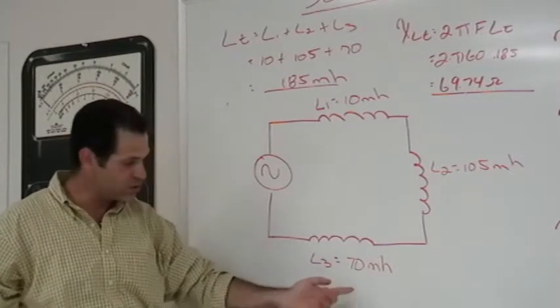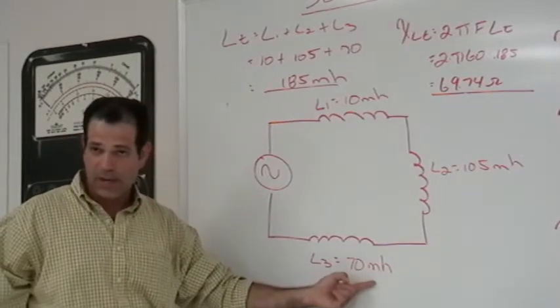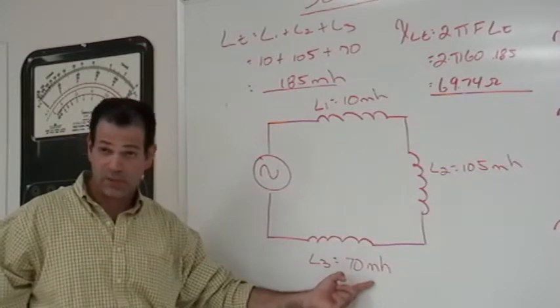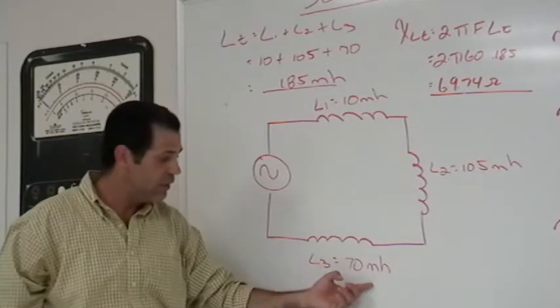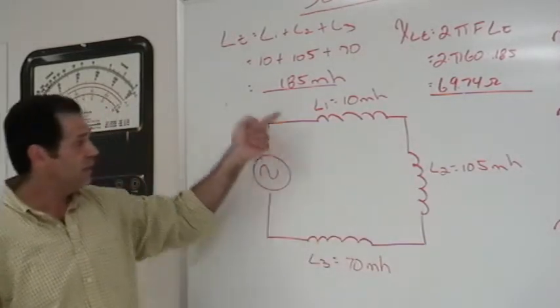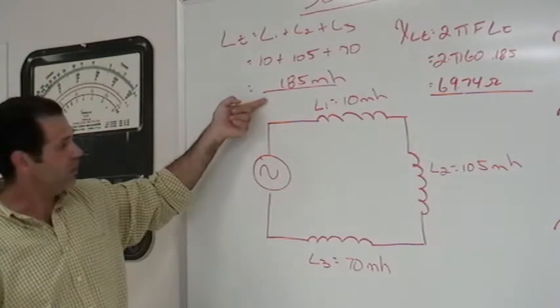If the prefixes were different, for example, if this was micro, we would have to convert them to all the same prefixes or their base value. In this case they're the same and the outcome would be the same as well.